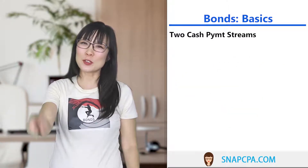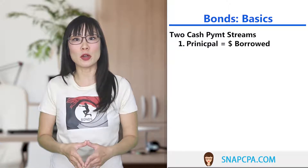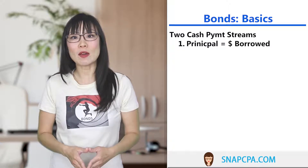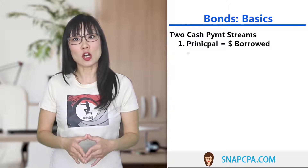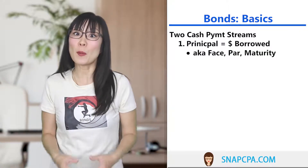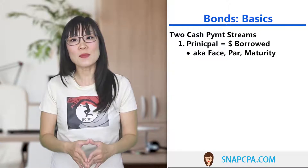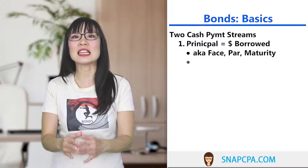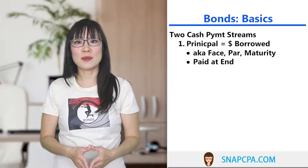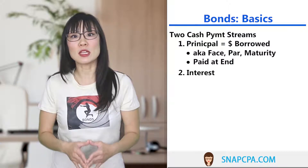Just like for other loans, there are two cash flow streams. First, there's the principal — the amount being borrowed. Note the principal amount has several different names: it's also called the face amount, the par value, or the maturity value. This amount gets paid at the end of the bond term. The second cash stream is the interest.